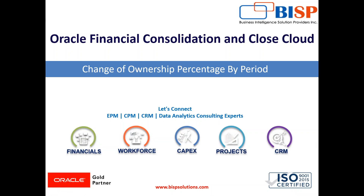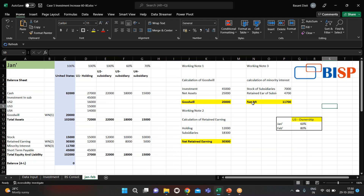Hello friends, welcome to BSP Solutions. My name is Basan and today I am going to show you a case of Oracle FCCS — that is, change of ownership percentage by period. So let's begin. This is our Excel sheet, and we will put the figures in our application by Smart View, and then we will see how the consolidation is done when there is a change in ownership percentage.